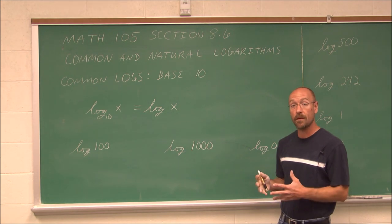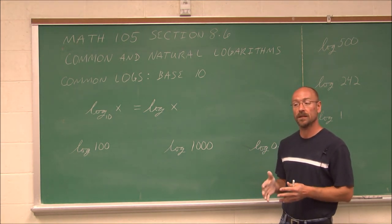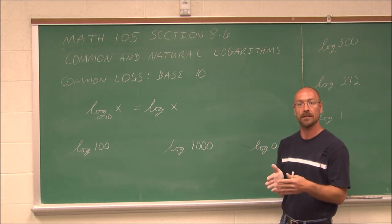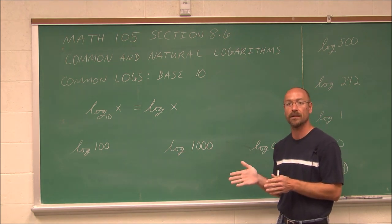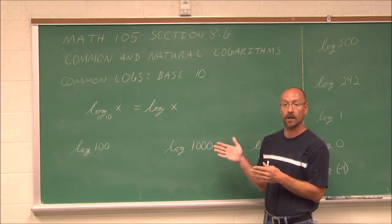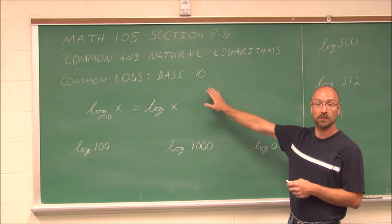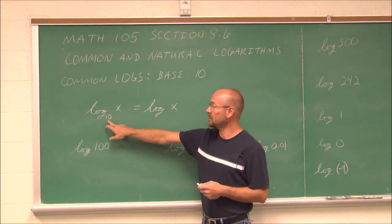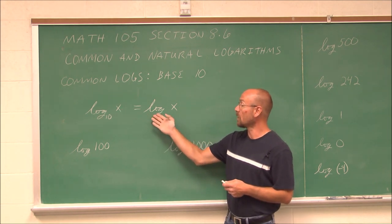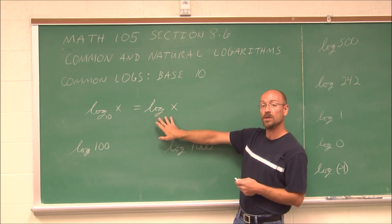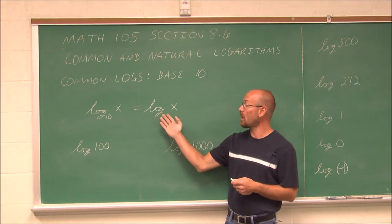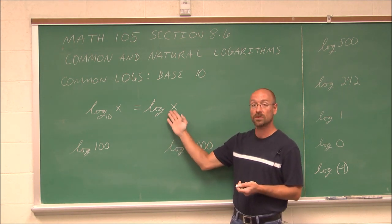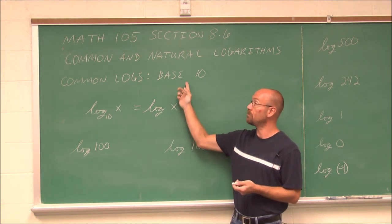The reason why this is the common log is because our number system is based on factors of 10. Anything to the left of the decimal point is a factor of 10 compared to anything to the right of it. So when we see a log base 10 of some argument, it's actually equal to log of the argument — it's so common that we do not denote a base. Whenever you see a logarithm that does not indicate a base, you have to assume it is a base 10 logarithm.